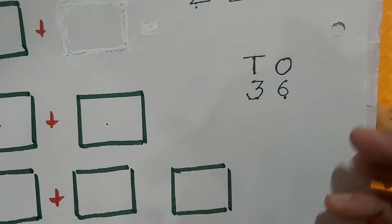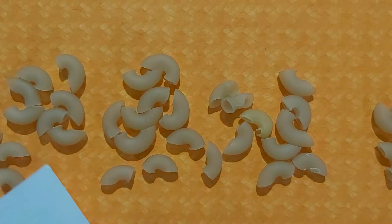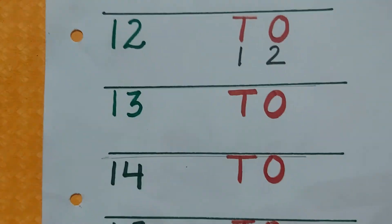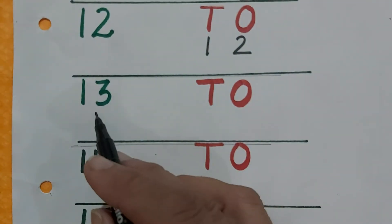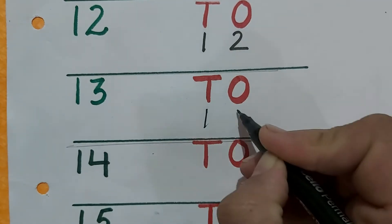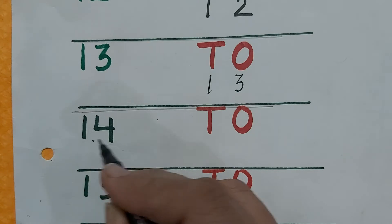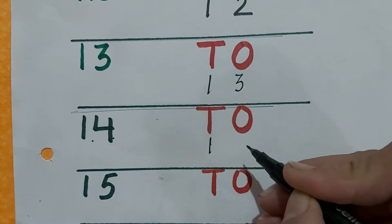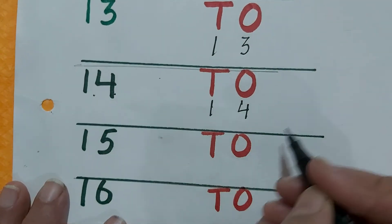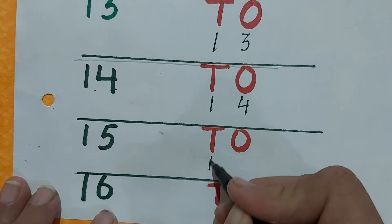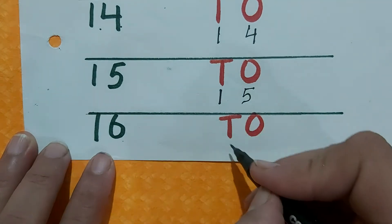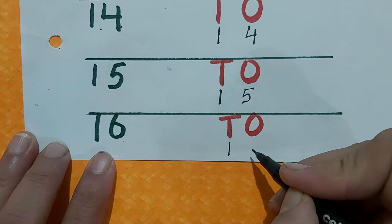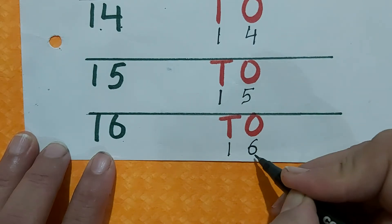Now children, I will tell you how to write numbers under tens and ones. 1 ten and 1 one is 11, 1 ten and 2 ones is 12, 1 ten and 3 ones is 13 — 1 ten comes under tens, 3 ones come here. 1 ten and 4 ones is 14 — 1 ten under tens, 4 under ones. 1 ten and 5 ones is 15 — 1 ten under tens, 5 ones under ones. 1 ten and 6 ones is 16 — 1 ten under tens, 6 ones under ones.